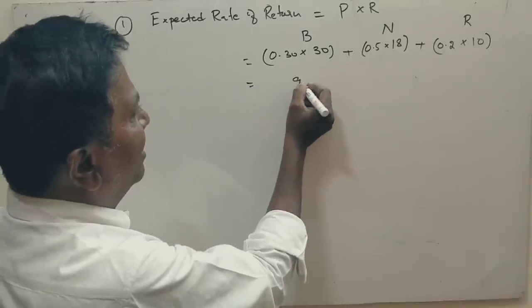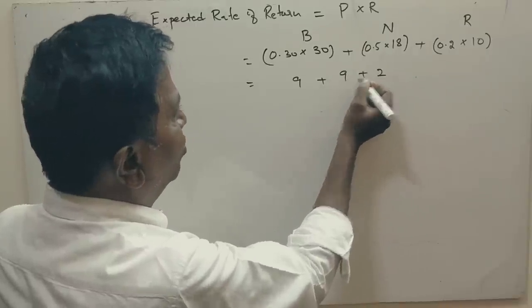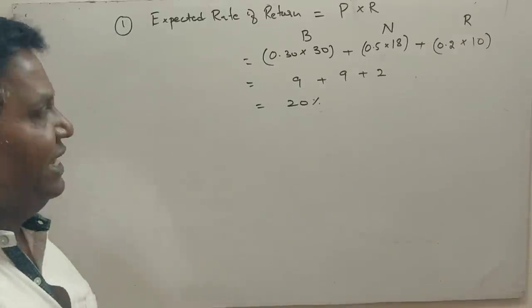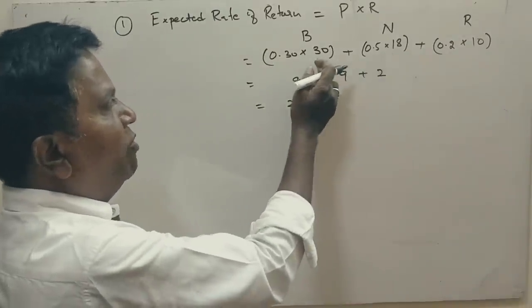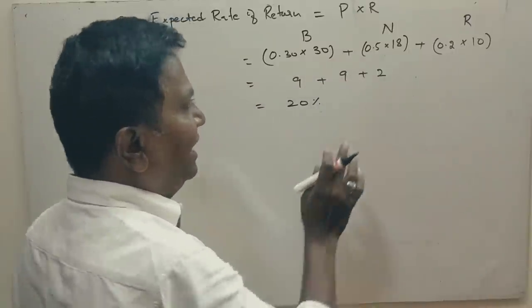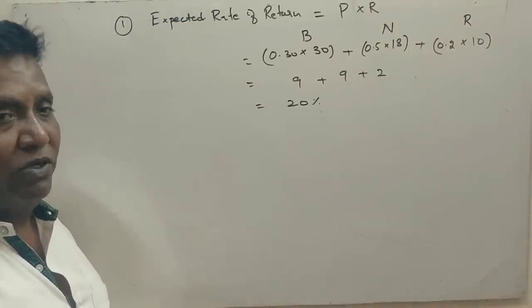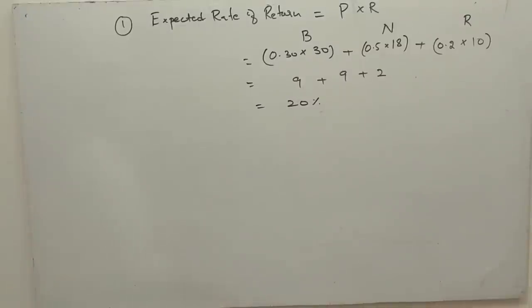3, 3's are 9 rupees. 18, 5's are 9 rupees. And 2 rupees. Exactly, you get 20%. See, during the normal period you will get 18, boom period 30, recession period 10. But, what is the probability of getting the amount? That is only this much.